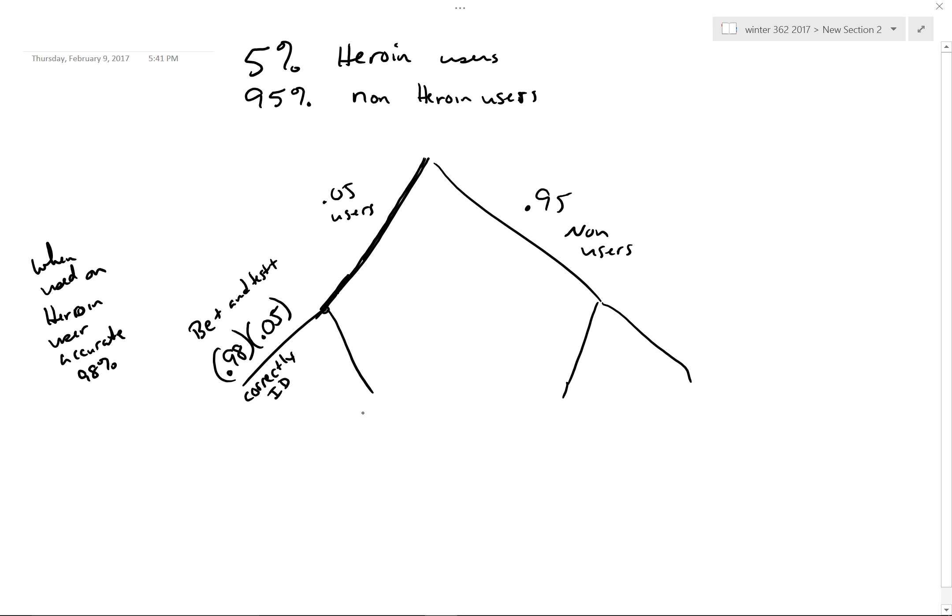These here are what we call false negatives. That is, 2% of the 5% are incorrectly identified. They are positive but they tested negative. Does that make sense? So the idea is that you either be positive and test positive, or you be positive and you test negative.